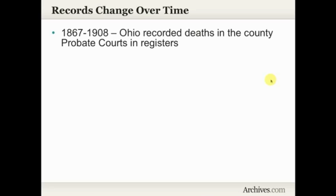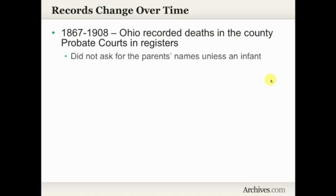Let's look first at records changing over time, using Ohio as an example. Ohio started keeping civil death records in 1867, originally recorded in the county probate courts in large registers — really big, thick, heavy books. Ohio kept death records in these large registers from 1867 through December 1908. What's important to note is that these early Ohio death records did not ask for the parents' names unless the person who died was an infant — that's the only time parents' names were supposed to be recorded.